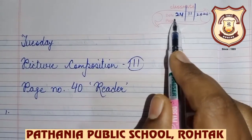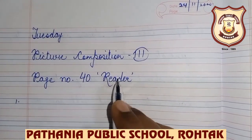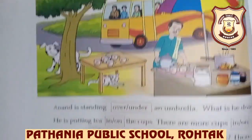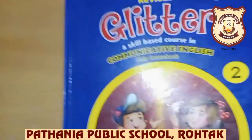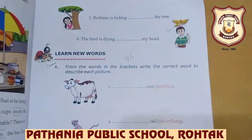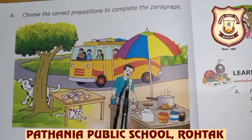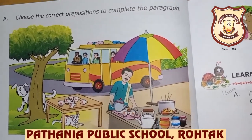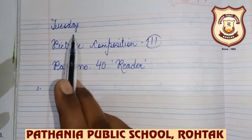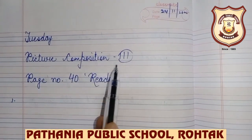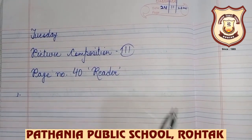Tuesday, 24 November 2020. Today we will do our third picture composition from page number 40 of the reader book. First of all, you have to write CW, day, date, picture composition, and mention the page number and book — page number 40, reader book.